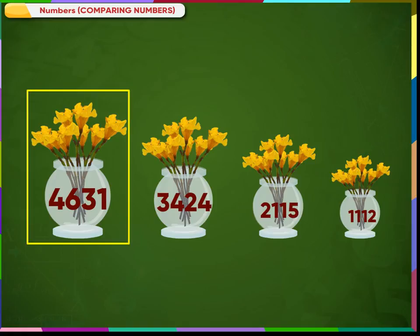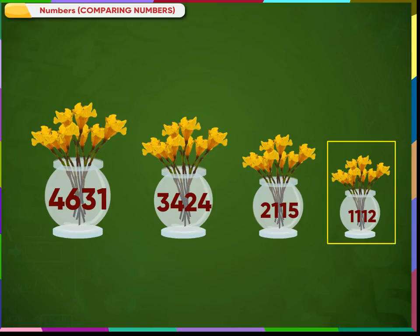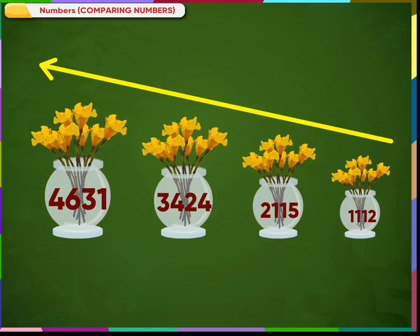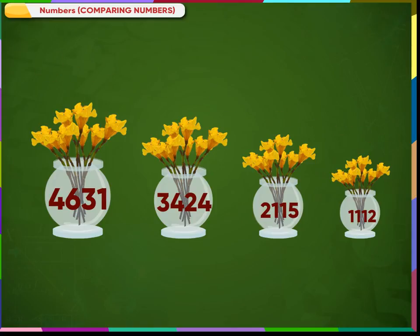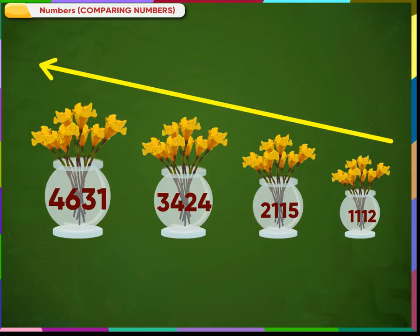Here, the number 4631 is the biggest, which is written first, and the number 1112 is the smallest. So, remember, decreasing order means arranging anything from largest to smallest.